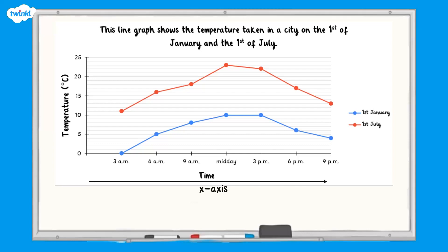The horizontal axis, or x-axis, goes from left to right at the bottom of our graph. On this graph it tells us the time that the temperature was taken. It is labelled in steps of three hours, starting at 3am and finishing at 9pm.